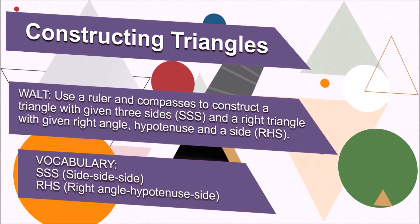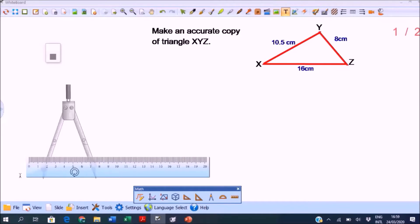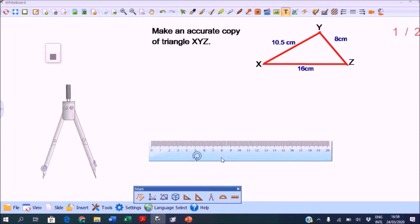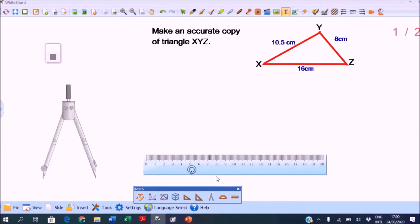Let's make an accurate copy of the given triangle. This type is SSS - the three sides are given, so we will use a ruler and compasses. First let's draw the base line 16 centimeters using our ruler, then draw the line.